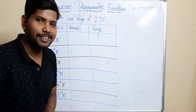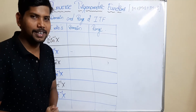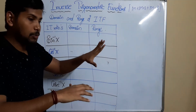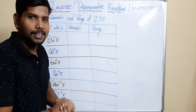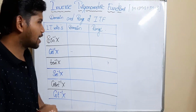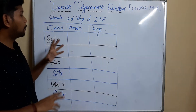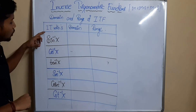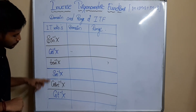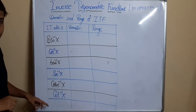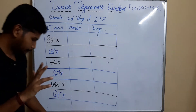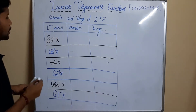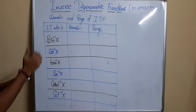Hello students. In the last part we discussed about domains and ranges with respect to graphs. In this particular class I'd like to tell you how to remember the domain and ranges of all the six inverse trigonometric functions in an easy manner. Concentrate here — it is very easy to understand.